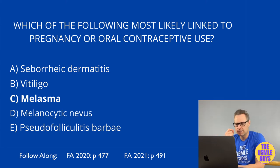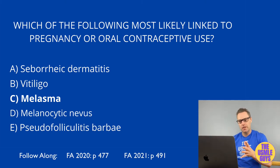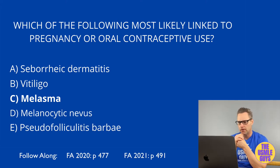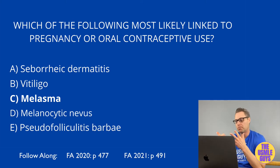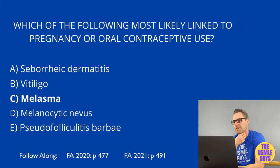Melanocytic nevus is nothing more than the common mole. While typically benign, melanoma can arise if the lesion becomes atypical — so always monitor moles and photograph them regularly. Pseudofolliculitis barbae, known as razor bumps, is an inflammatory skin disorder from shaving. The lesions that develop are firm, hyperpigmented papules and pustules that are both painful and itchy.